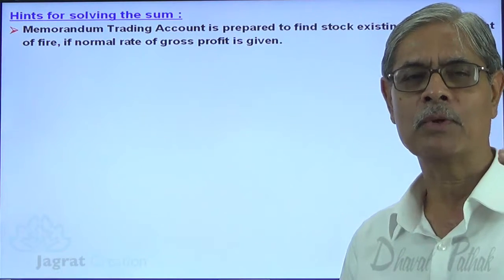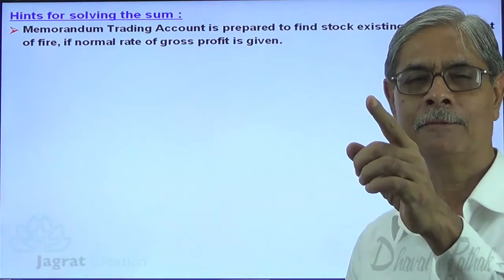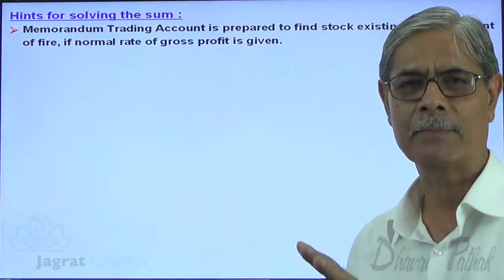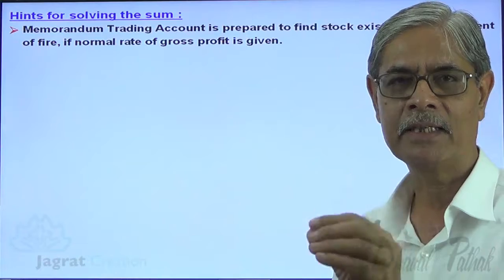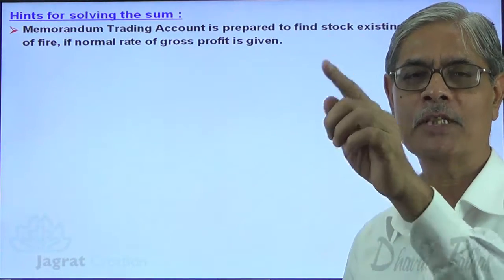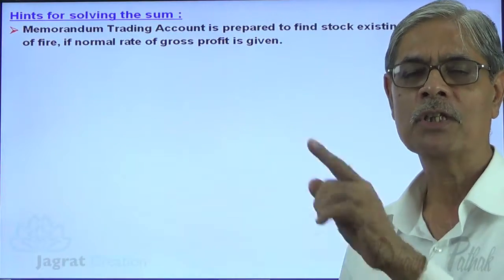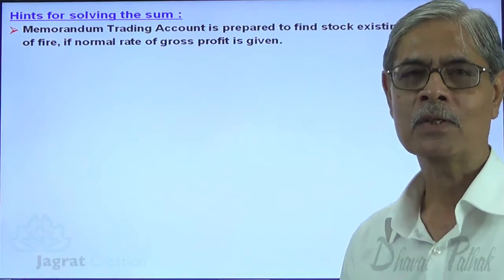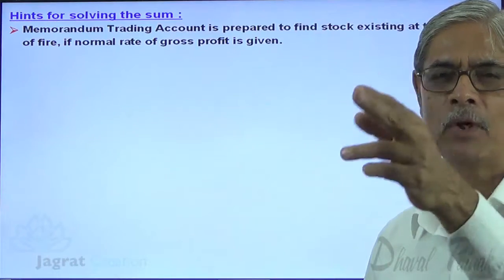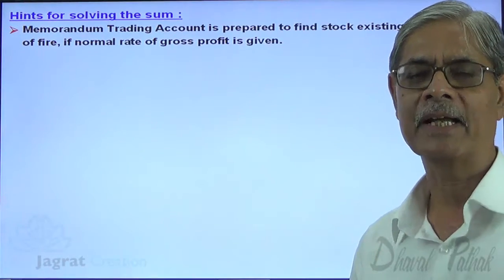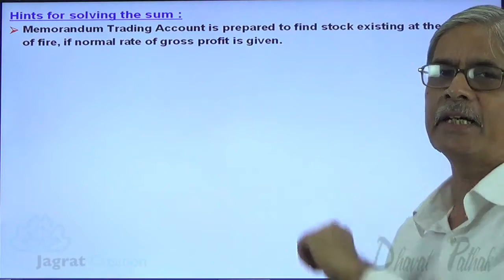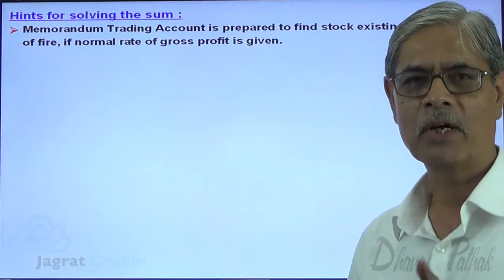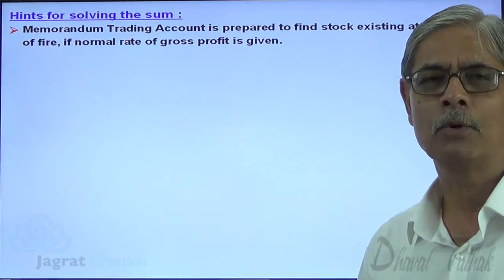The second difference: the purpose of a normal trading account is to find out the gross profit. Here, the gross profit details are available to us on the basis of past experience or policy matters. So, this Memorandum Trading Account is prepared to find out the stock that existed at the moment of fire — which is just alike to closing stock. Purpose of a normal trading account is to find gross profit; here, the purpose is to find out the stock existed at the moment of fire.